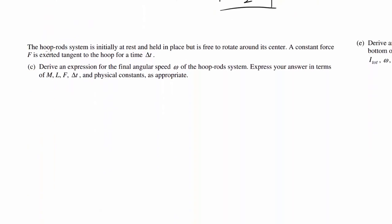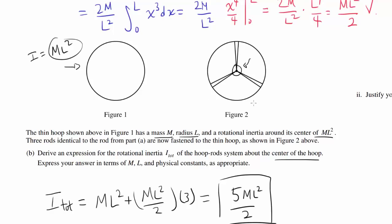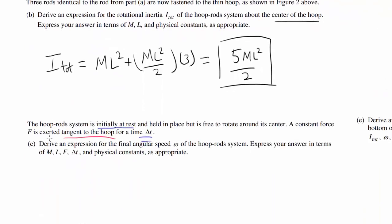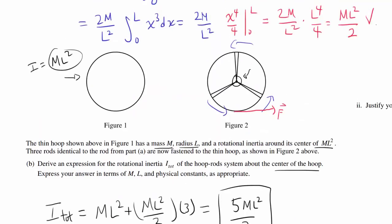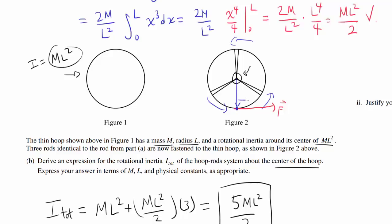Going on to Part C: the hoop-rods system is initially at rest and held in place but is free to rotate about its center. A constant force F is exerted tangent to the hoop for time delta t. This wheel is essentially rotating in place about the center. Since the force is applied tangent to the hoop, the angle between the radius vector and the force is 90 degrees.